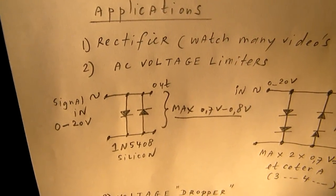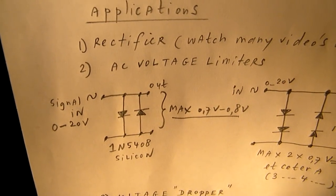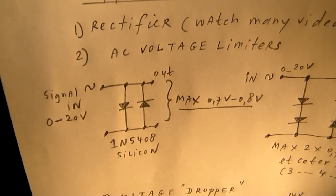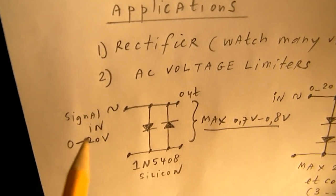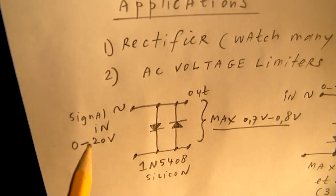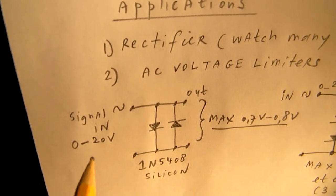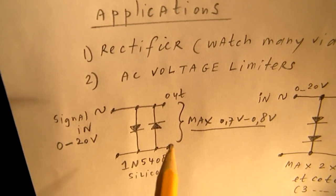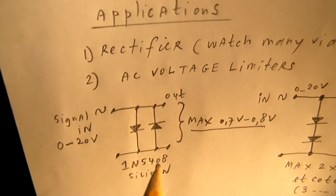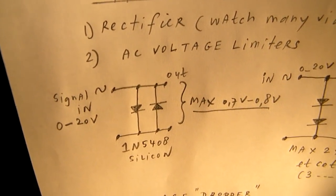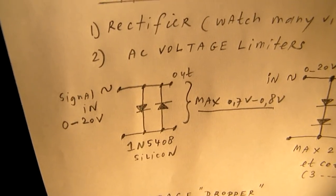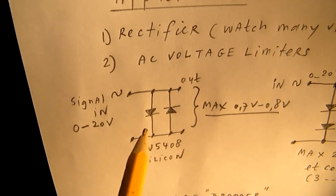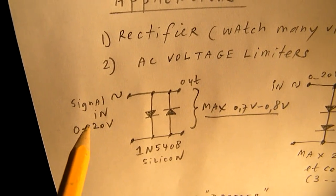A good application for such a diode could be an AC voltage limiter. When we send in here a voltage, an AC voltage between 0 and 20 volts, the diode will cut off everything above 0.8 volts. In this case for both phases from the AC signal.